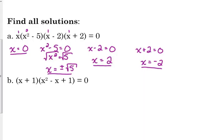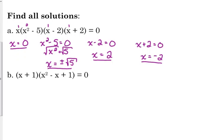Now, b. It may not look like it's fully factored, but b is fully factored. x squared minus x plus one will not factor any further. This is the factored form of x cubed plus one, if you're curious. So it is fully factored.